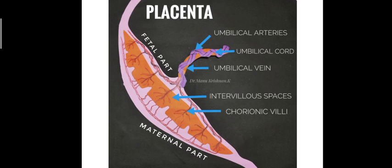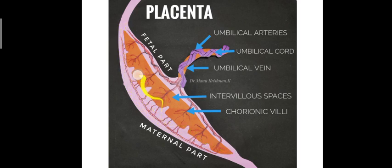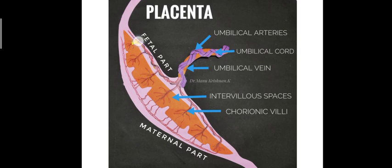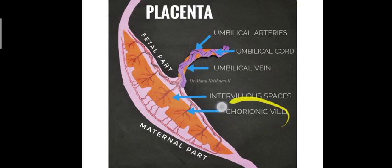Here we can see a depiction of the placenta, which is attached to the uterine wall. You can see an orange-colored area — that is the intervillous space, a potential space in which the maternal blood is pooled. There are certain projections lying inside these intervillous spaces, and those are termed the chorionic villi.